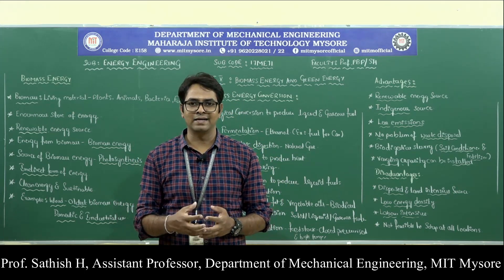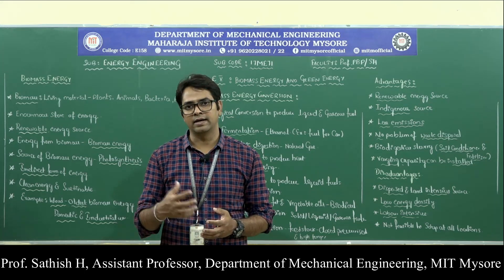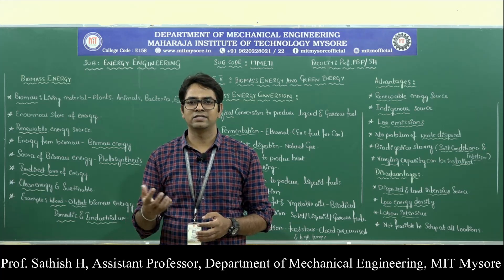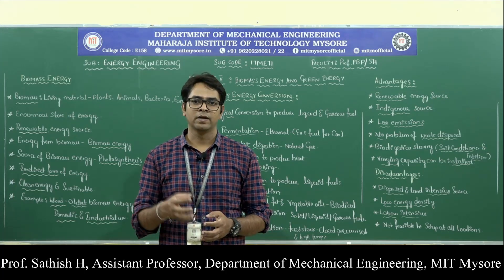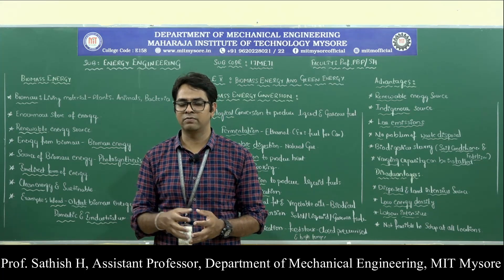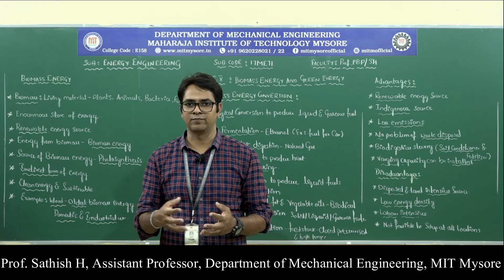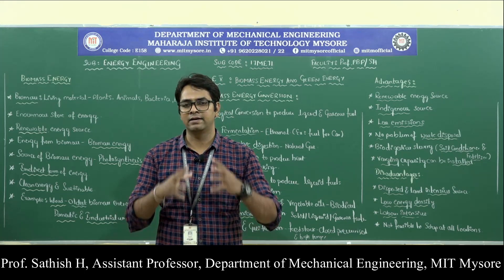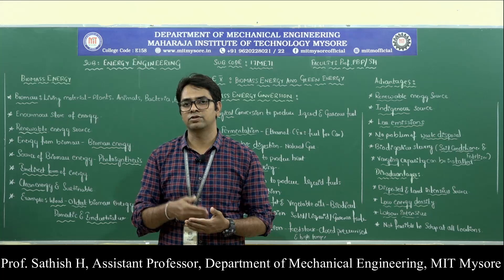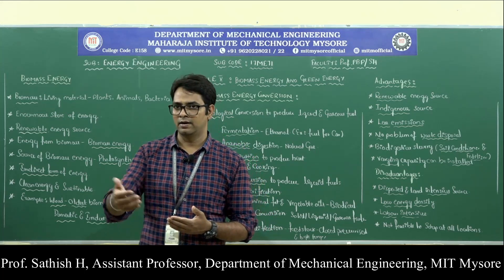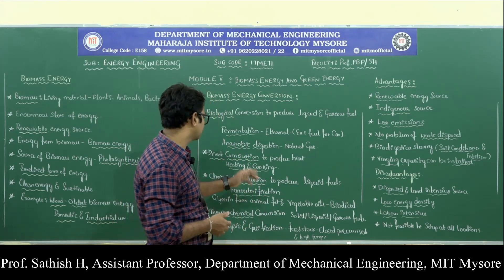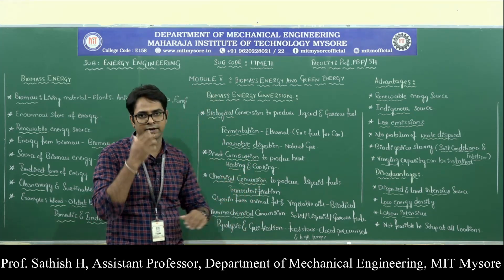If you burn dry wood directly, it gives out energy in the form of heat. That heat energy can be used to cook food, produce steam, or boil water. So direct combustion of this biomass gives heat energy, which can be used for heating and cooking purposes.